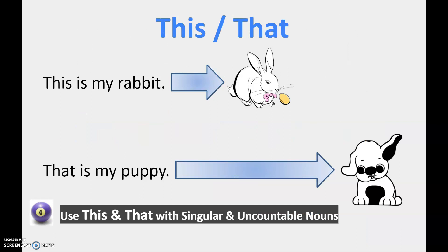So when we have a singular item, we use words this and that. This is my rabbit. That is my puppy. And the difference is this is when something is close or feels close and that when something is far or feels far.